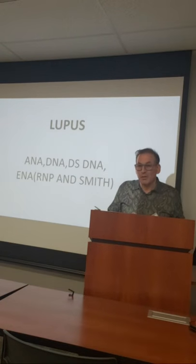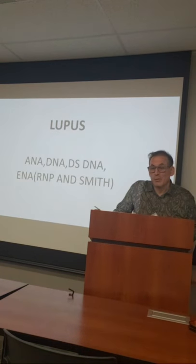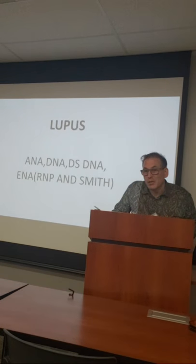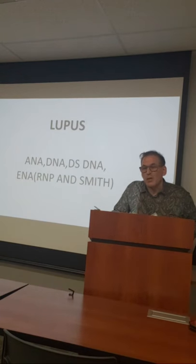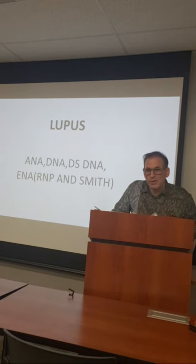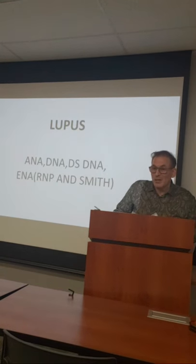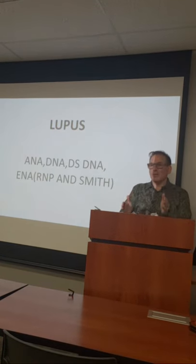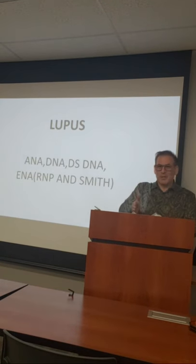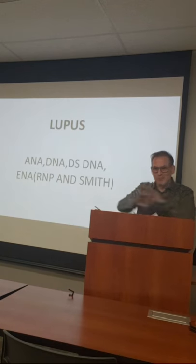A patient who doesn't fit the criteria but has lupus gets documented as a working diagnosis of lupus based on available evidence. For the boards: CCP high equals RA; ANA and DNA positive equals lupus. In real life things get tricky when you have both high ANA with high RF and low DNA or medium CCP, but don't worry about that now. Board exam answers are straightforward.